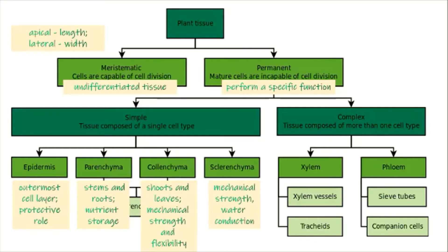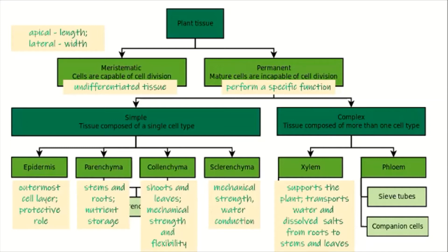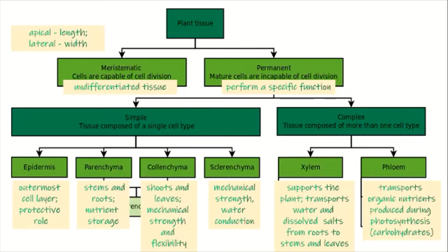Now let's go to the complex plant tissues. You commonly hear about xylem and phloem. The xylem is composed of xylem vessels and tracheids, while the phloem has sieve tubes and companion cells. The function of the xylem is for support and transport of water and dissolved salts from the roots to the stems and leaves. The phloem is responsible for the transport of organic nutrients produced during photosynthesis — your carbohydrates or sugars.